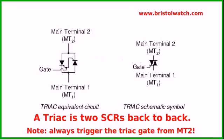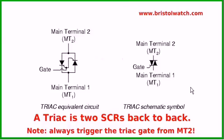Knowing that an SCR is a unidirectional device — only conducting current in one direction — we can take two SCRs connected back-to-back, cathode-to-anode and anode-to-cathode, and tie the gates together to have a solid-state switch that will conduct in both directions. What we end up with is a solid-state AC switch commonly known as a TRIAC. To summarize: a TRIAC is two SCRs back-to-back, and just like you have to trip an SCR from the anode, you have to trip the gate on a TRIAC from MT2.